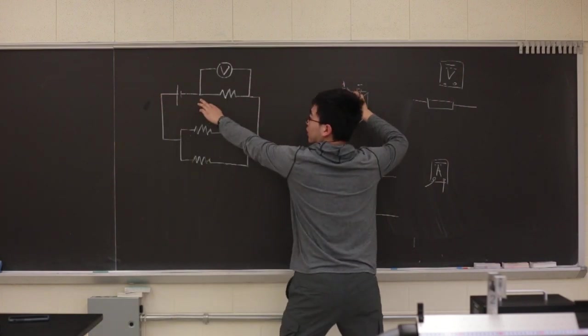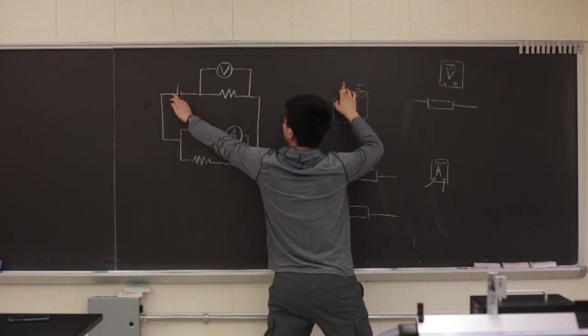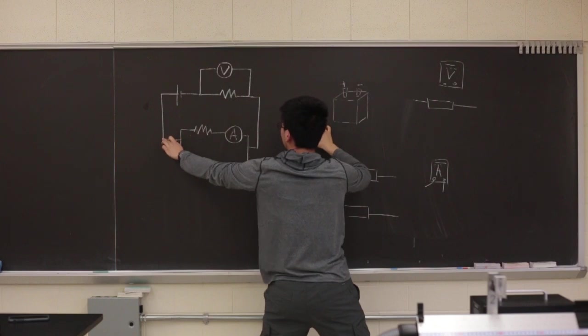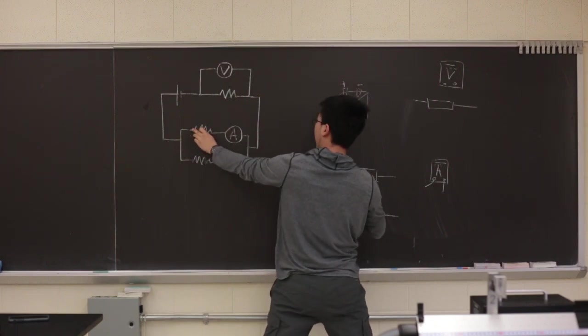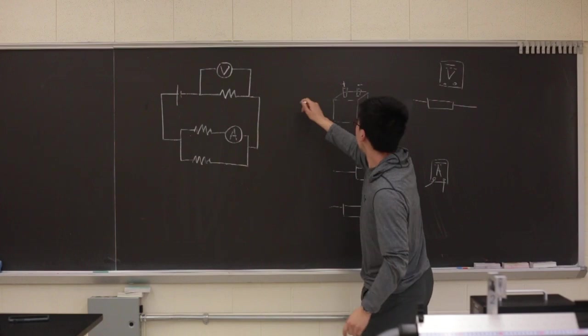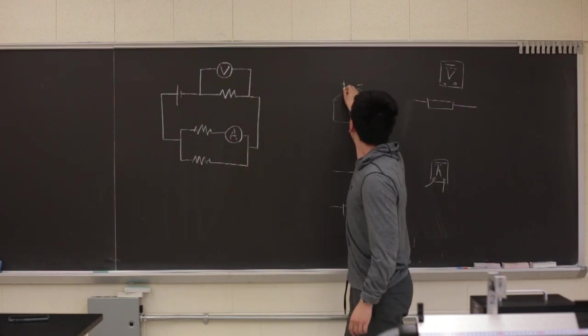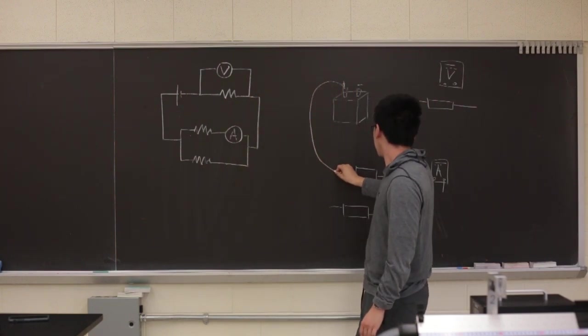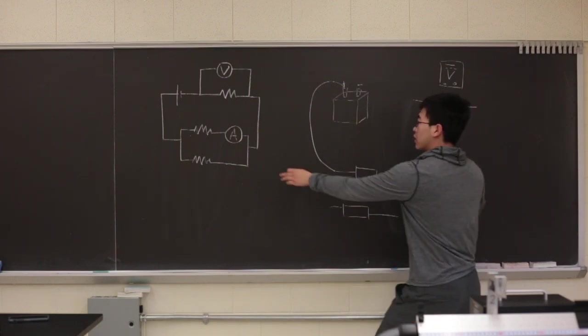You basically map the positive antenna, have a wire connect to one side of the resistor, see? Positive to one side of the resistor, across this resistor.